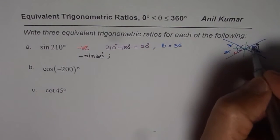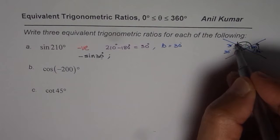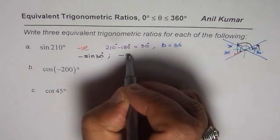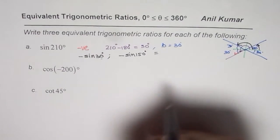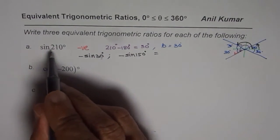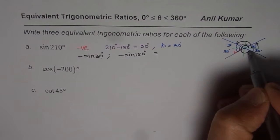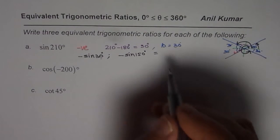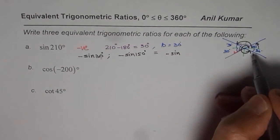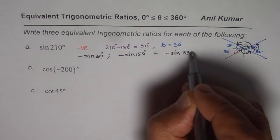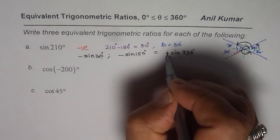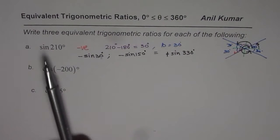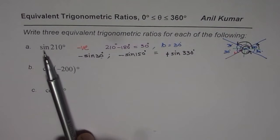For quadrant 2, the angle is 180 minus 30, which is 150 degrees. Sine is positive there too, so we must make it negative: minus sine 150 degrees. In quadrant 3 we already had 210, which is negative. For quadrant 4, the angle is 360 minus 30, which is 330 degrees. Sine is automatically negative in quadrant 4, so we write positive sine 330 degrees. These three are the equivalent trigonometric ratios for sine 210. You can use your calculator to verify they all give the same value.